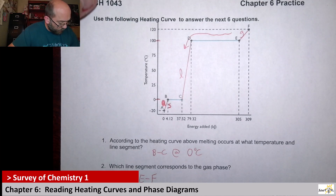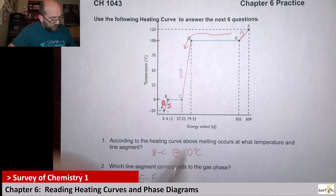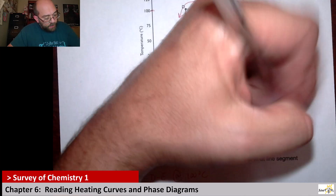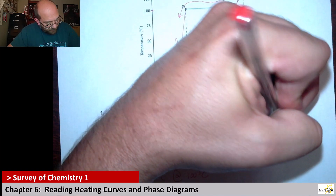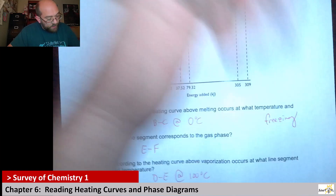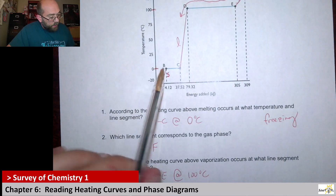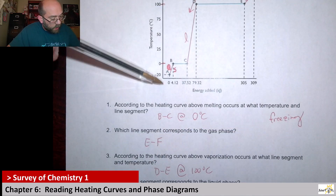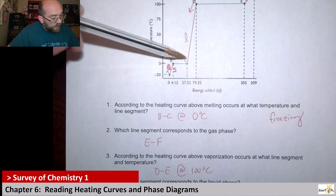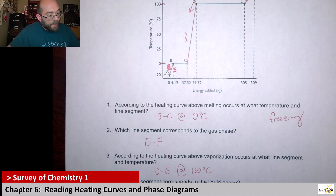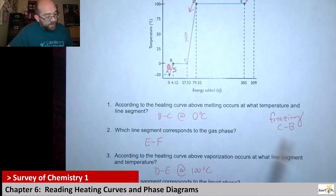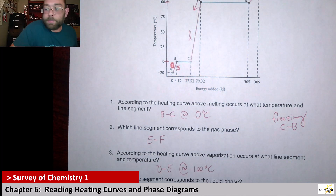So we went over melting, vaporization, and condensation. Now the opposite of melting is freezing. If it asks for the freezing temperature, that would still be the same as melting. The only difference with freezing is you're going from liquid to solid, so the segment wouldn't be BC — it would be the opposite direction, CB. It would happen at the same temperature, 0°C. You're just going in the opposite direction.